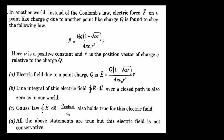In another world, instead of Coulomb's law, the electric force F on a point-like charge small q due to another point-like charge capital Q is found to obey the following law: vector F equals Q·q times (1 minus root of αr) divided by 4πε₀r³ times vector r. Here α is a positive constant and vector r is the position vector of small q relative to capital Q.